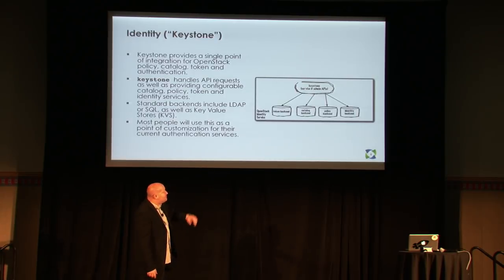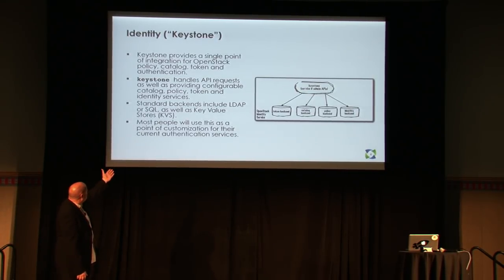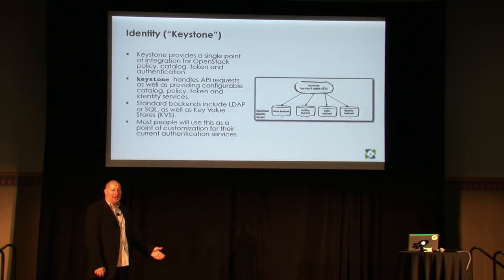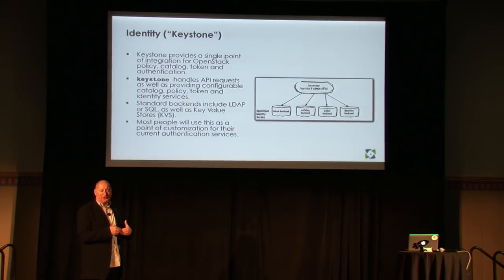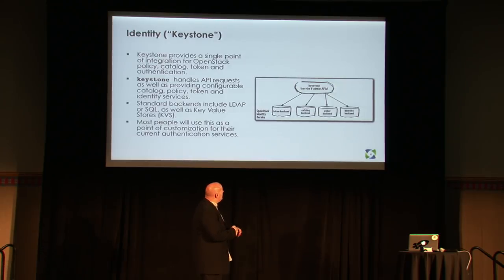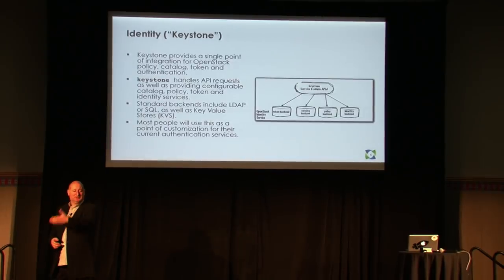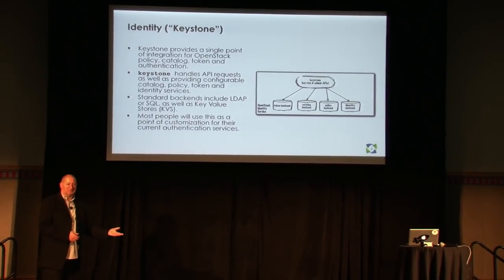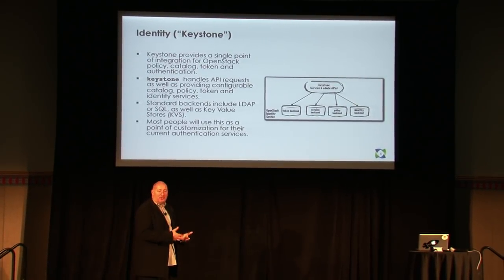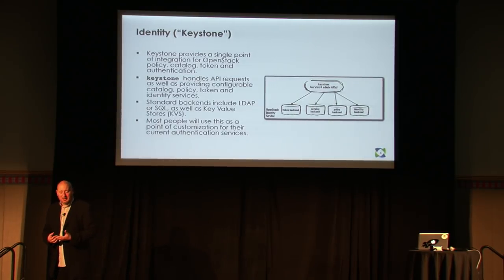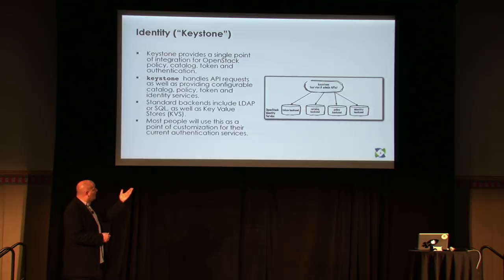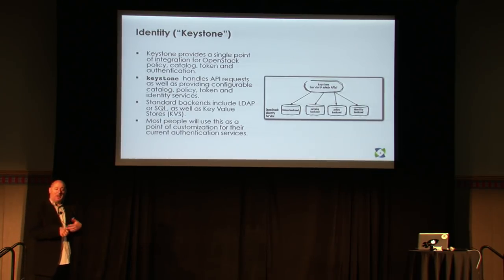Keystone is a single service with basically four backends. You get API requests for catalog, policy, token, or identity services, and then there's a backend that actually fulfills the service. The most common is the identity backend — you come in with your name and password asking to be authenticated. That could be backed by a number of different backends. This is a common theme and common source of confusion in OpenStack: there tend to be many ways to implement a backend, such as a MySQL database, LDAP, or Active Directory.